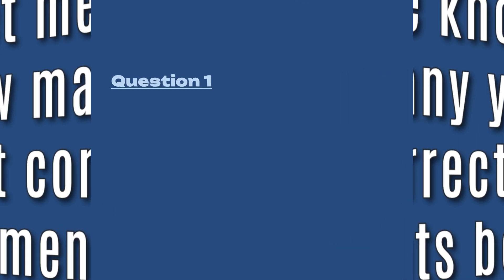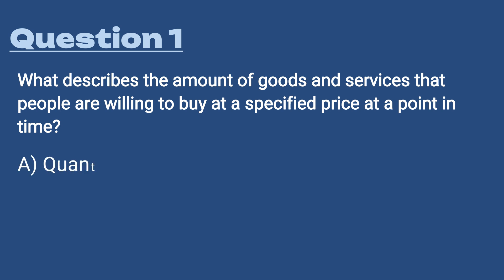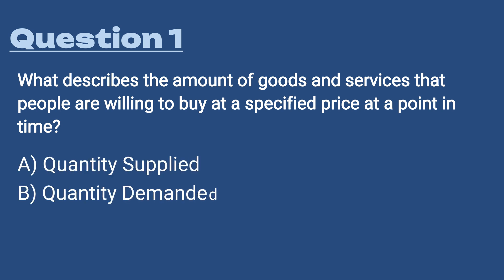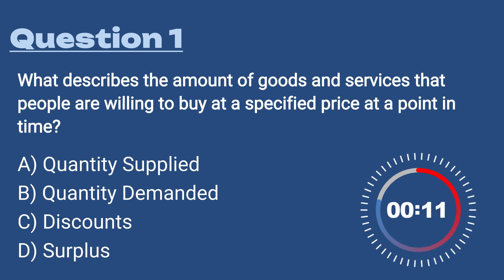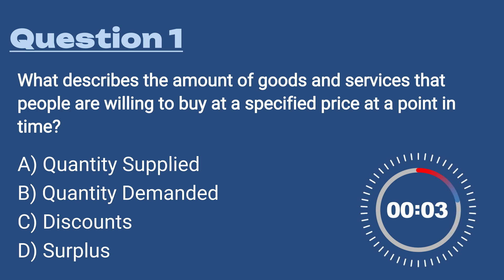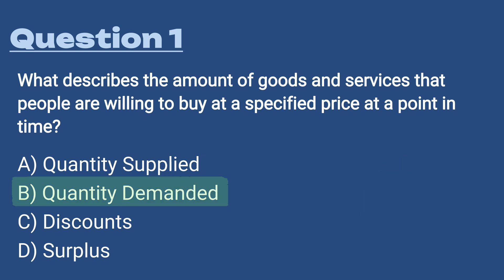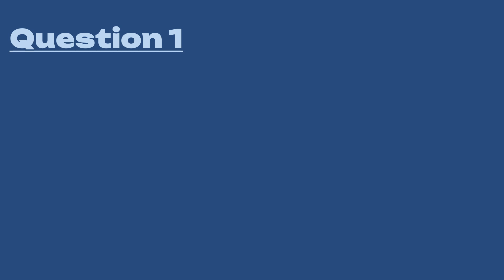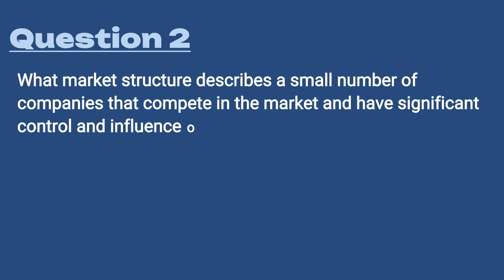Question number one: what describes the amount of goods and services that people are willing to buy at a specified price at a point in time? A) Quantity supplied, B) Quantity demanded, C) Discounts, D) Surplus. The answer is B, quantity demanded — the amount of goods and services that people are willing to buy at a specified price at a point in time.